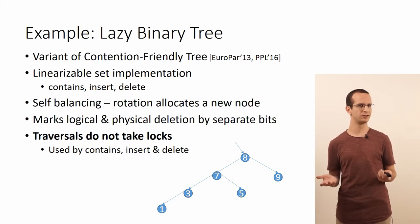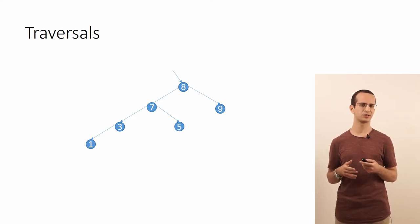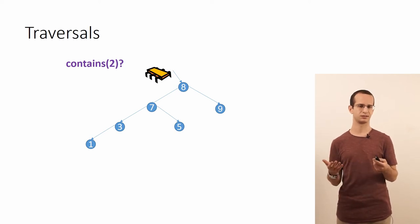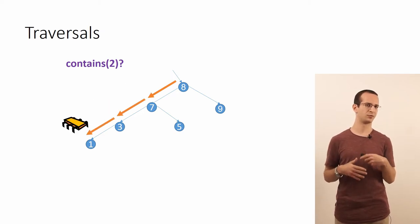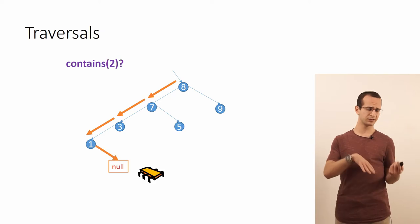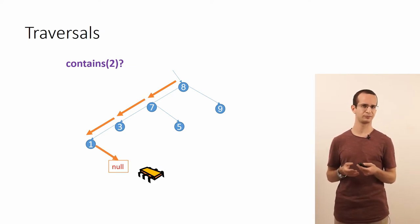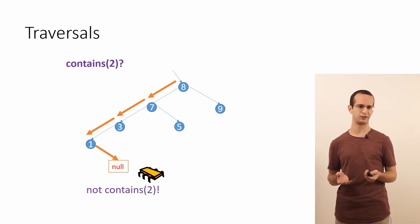So what's the deal with these traversals? Consider, for example, this binary tree where we want to check whether it contains the key 2. So we start from the root and perform a binary search: we go from 8 to 7 to the left, and then from 7 to 3, then from 3 to 1, then we turn to the right to see that the right child of 1 is null, indicating that the tree doesn't contain the value 2.